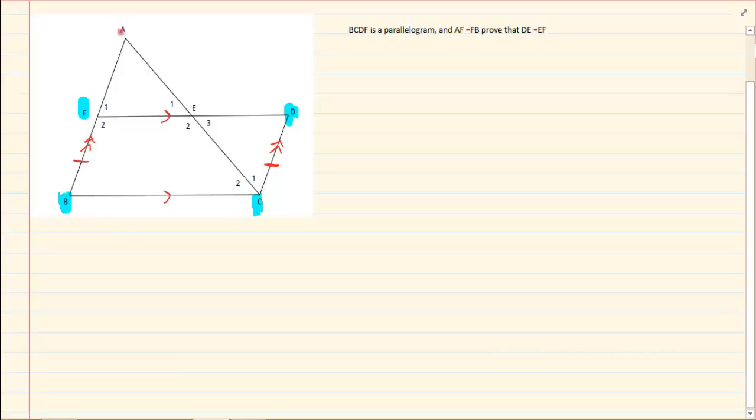Then they tell us that AF is equal to FB, which means they're telling us that this line here is equal to this line, which immediately now we can see. But you know what? Then this is going to equal to this. Now, what do we need to prove? We need to prove that DE is equal to EF.